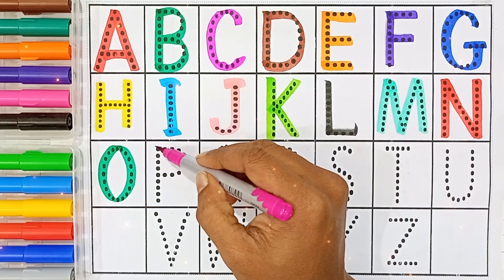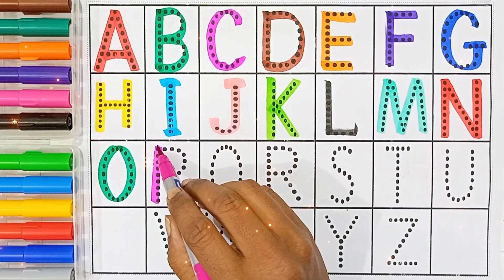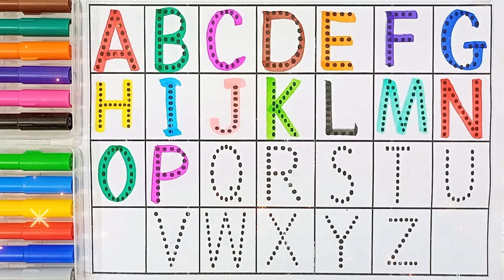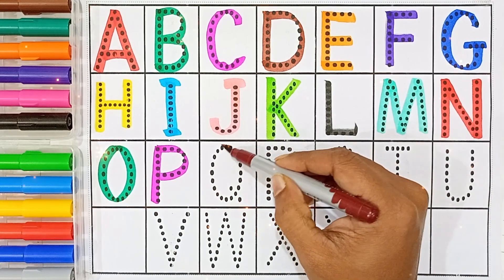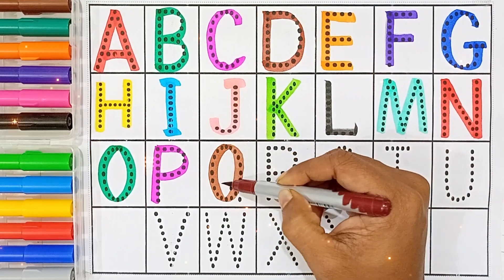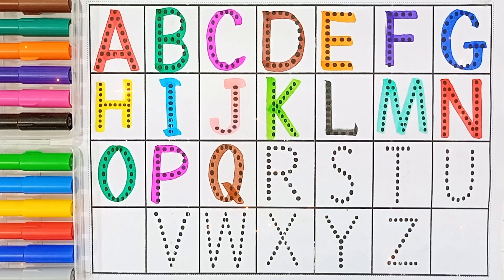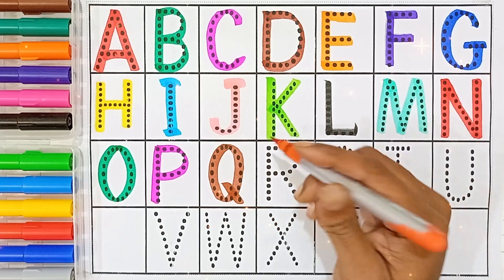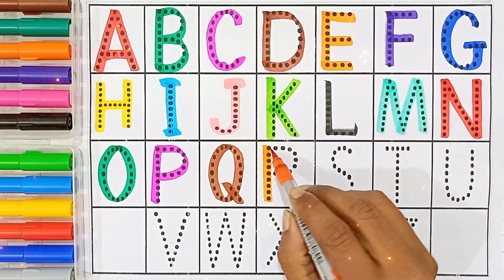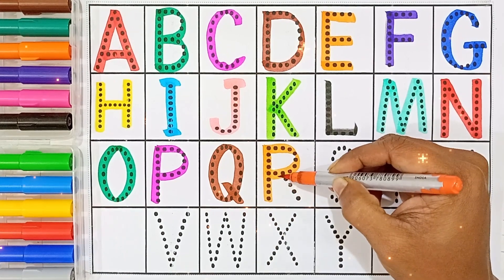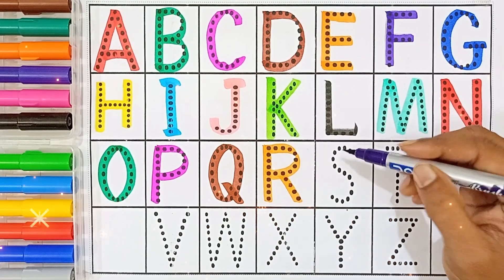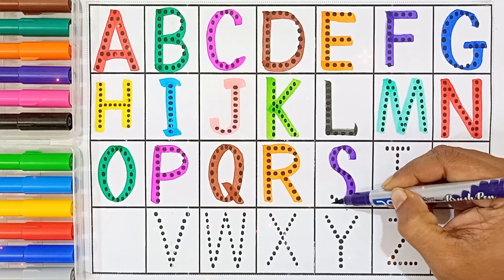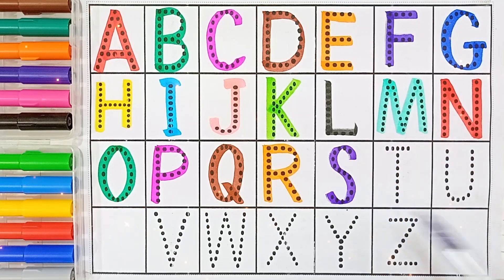O ke baad aata hai P. Capital letter P — P for pen. P ke baad aata hai Q. Capital letter Q — Q for queen. Q ke baad aata hai R. Capital letter R — R for rat.